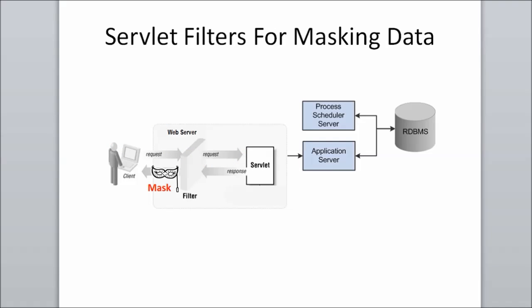The last way that I'm using servlet filters is to mask sensitive data that leaves the system. A client will make a request for a resource that contains sensitive information, and the servlet will generate an HTML document to display this information in the user's browser. At that point, the servlet filter will look at the HTML document and replace any sensitive values with a mask value before it sends it off to the client's browser. This is extremely useful because you're not changing the data in the database or modifying the application to achieve this.